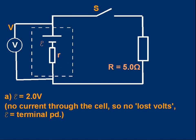If you want to pause to try that you can pause now. Okay, the first part, the emf is easy. The emf is 2.0 volts. That's what the voltmeter reads with the switch open. When there's no current going through the cell there are no lost volts and the emf is equal to the terminal PD. That's why it's 2.0 volts, same as the voltmeter reading.